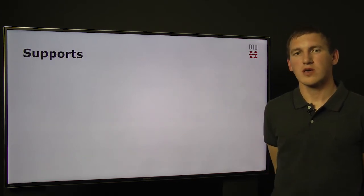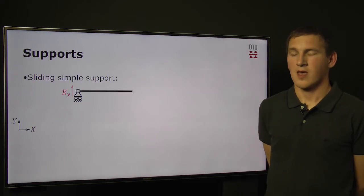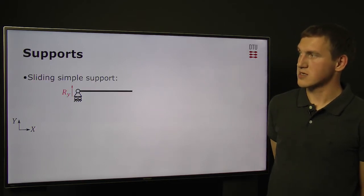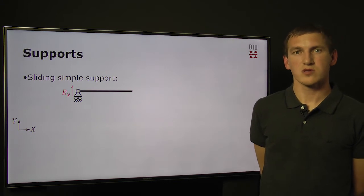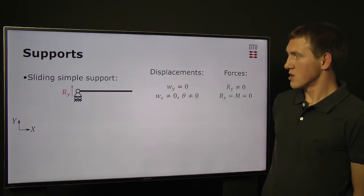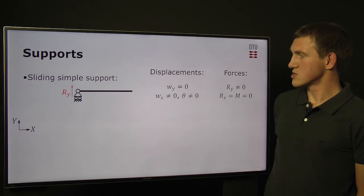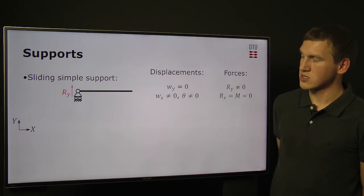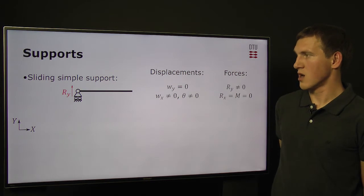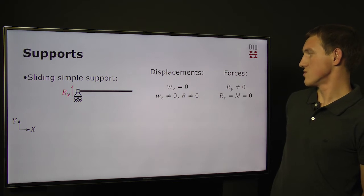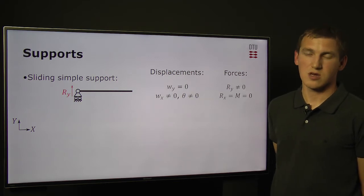Let's now look at how we can restrict or fix the beams in space — the way of providing support to them. There are many different ways, but within this lecture we will look at three idealized approaches. The first is called sliding simple support. It restricts movement of the beam only in the vertical direction: zero vertical displacement, while non-zero horizontal displacement and rotation. The reaction force provided by this support is only a non-zero vertical force, while the horizontal force and bending moment are zero.